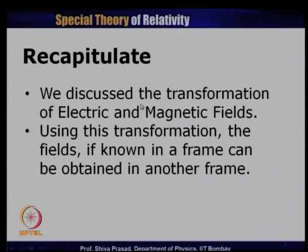We discussed the transformation of electric and magnetic fields. Using this transformation, if I know the electric and magnetic field in a given frame, I can find out the electric and magnetic field in a different frame. Today I will first show that some of these equations can be derived in a different fashion because they happen to be somewhat interdependent. Then I will give one specific example of how electric and magnetic fields transform when going from one frame to another.